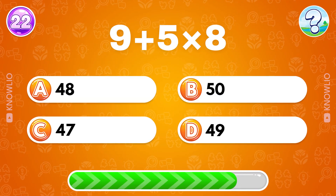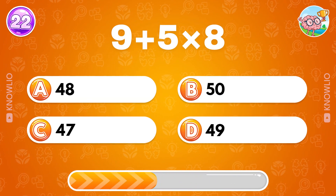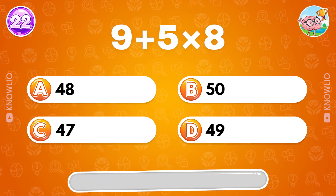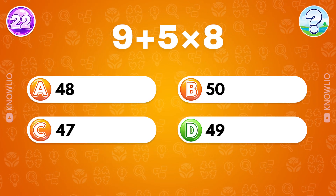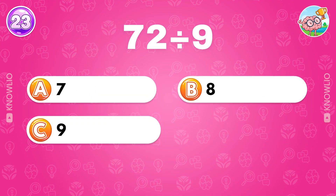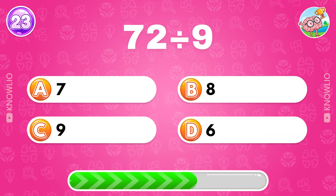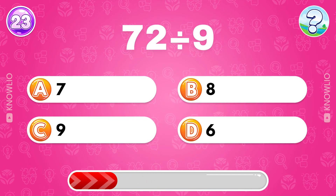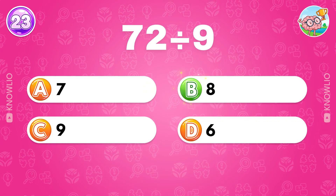Hard one: 9 plus 5 multiplied by 8. Answer D, 49. What's 72 divided by 9? Answer B, 8.